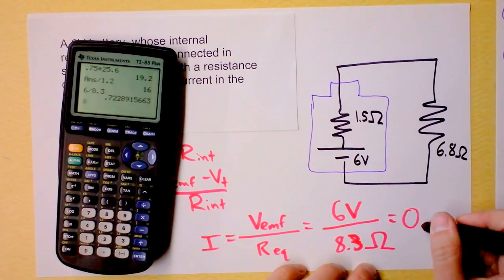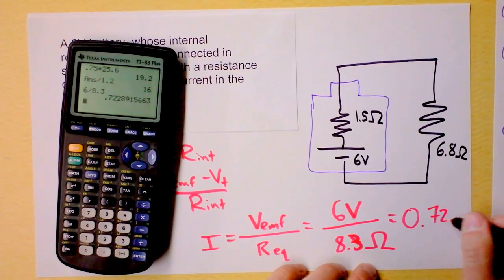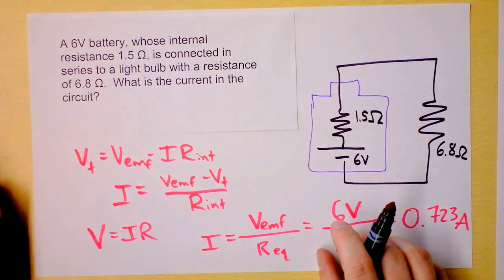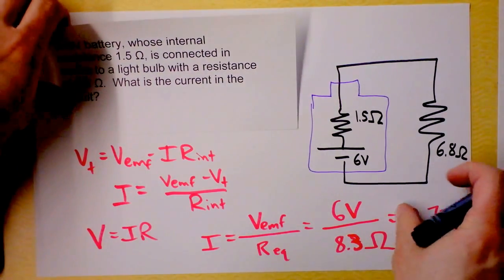So the current turns out to be 0.723 amps. It's enough current to kill a man, if it went through him, I guess. One more from New Jersey. Take it to the top, New Jersey.